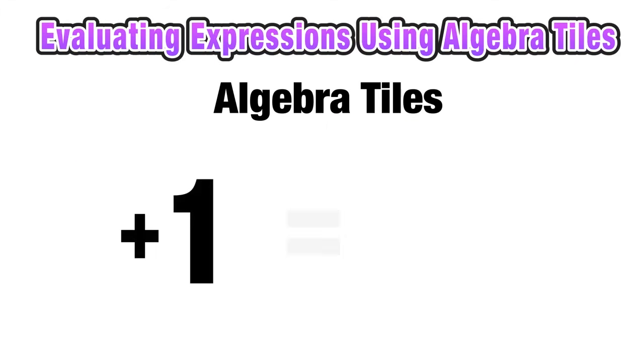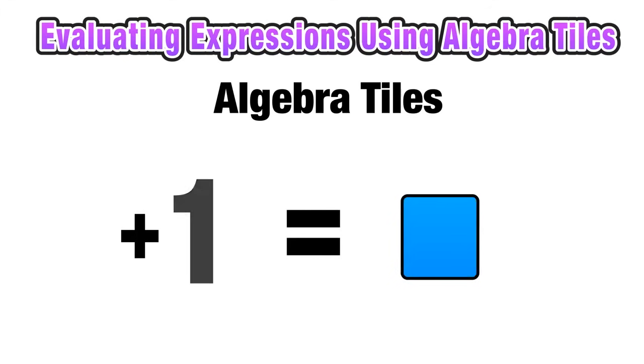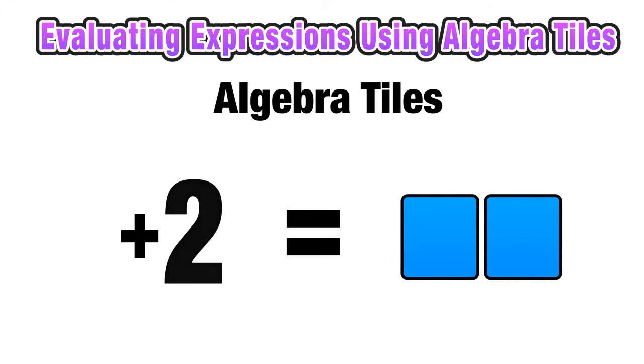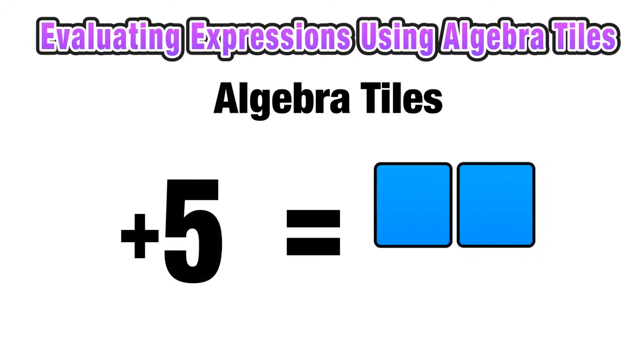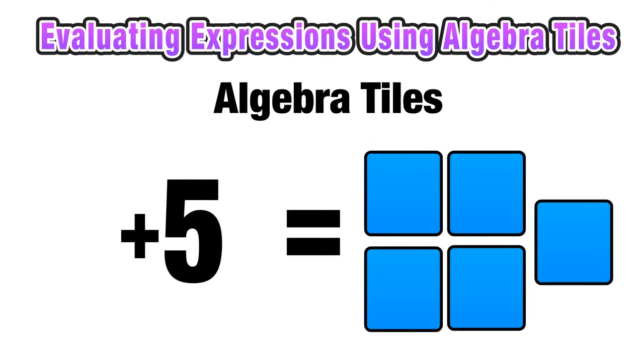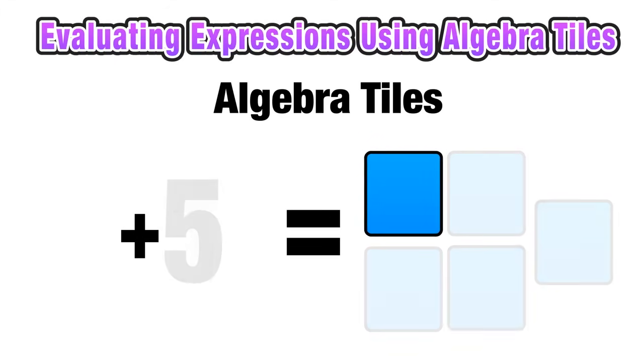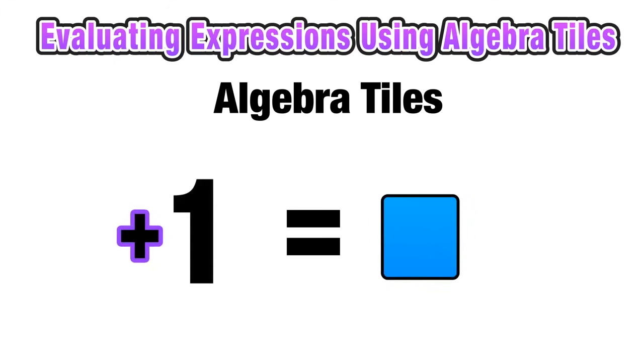Now a value of positive 1 is represented by a blue square algebra tile. So if we wanted to represent positive 2, we would use 2 blue squares. If we wanted to represent positive 5, we would use 5 blue squares. So it's pretty simple here. Each one represents positive 1.